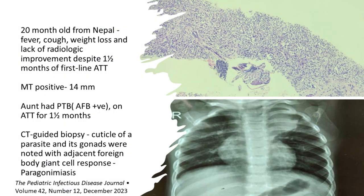We had a 20-month-old boy from Nepal with fever, cough, weight loss, and an x-ray showing a left upper zone patch. There was no improvement despite being on anti-TB drugs for one and a half months. He was started on first-line treatment because the aunt had AFP-positive pulmonary TB and the child's Mantoux was positive — purely circumstantial evidence. When we did a CT-guided biopsy, the histopath slide showed a parasite with wings — a lung fluke. On reviewing the history, there was exposure to sheep.